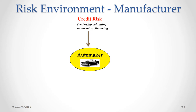What typically happens is that the automaker delivers cars to a dealer on credit, and the dealer owes money to the automaker for those cars.